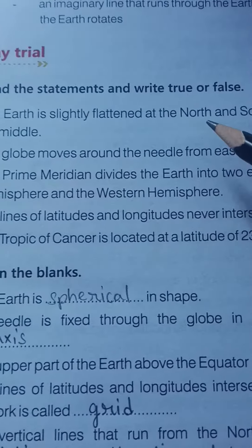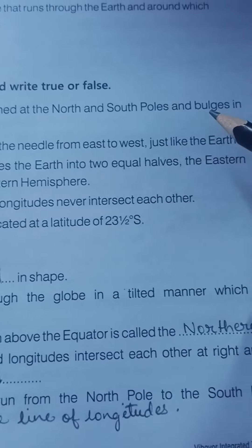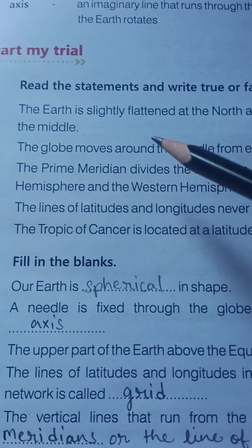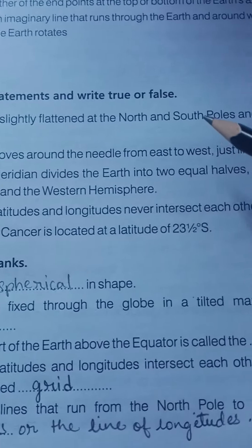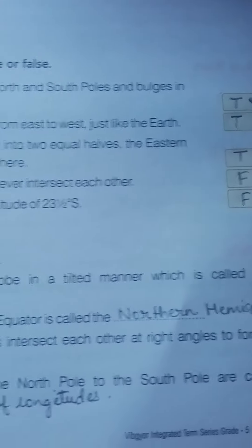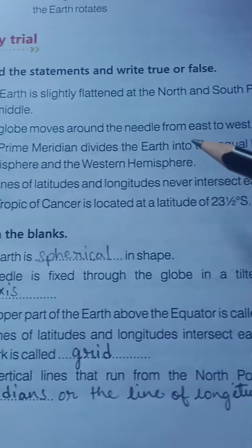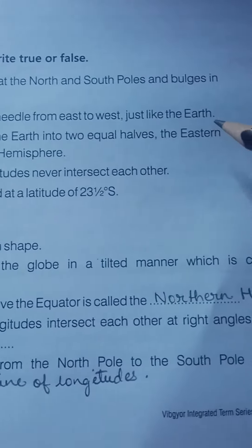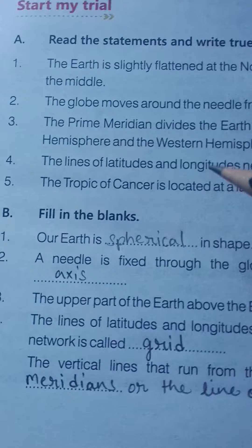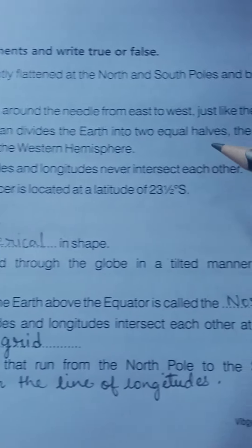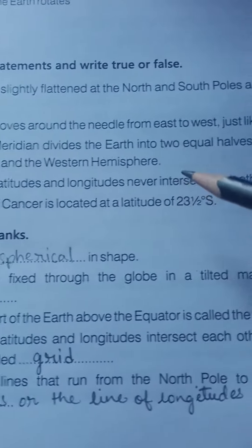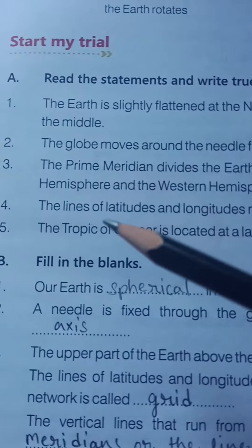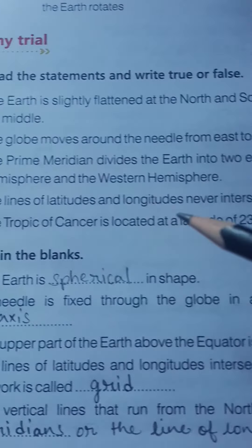Number one: The earth is slightly flattened at the north and south poles and bulges in the middle. True. Number two: The globe moves around the needle from east to west, just like the earth. True. Number three: The prime meridian divides the earth into two equal halves — the eastern hemisphere and the western hemisphere. True.